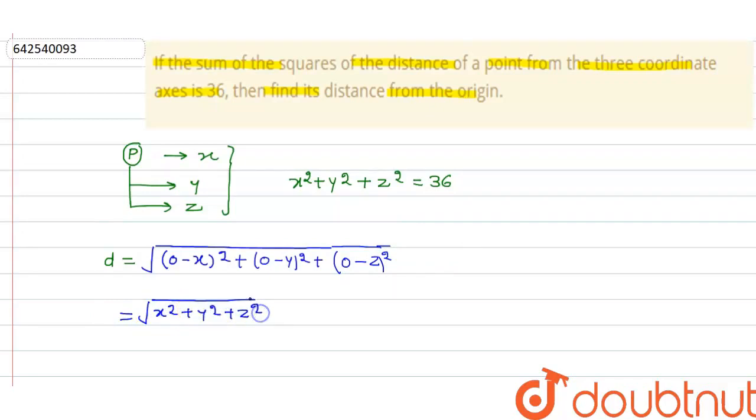And we know that the value of x-square plus y-square plus z-square is 36. So this becomes root of 36, which is equal to 3 root 2. So our distance is 3 root 2. Thank you.